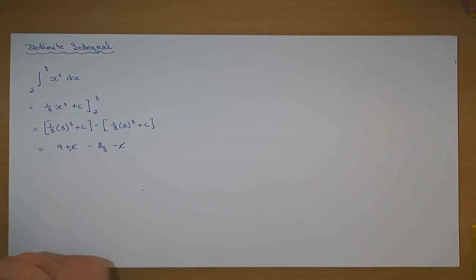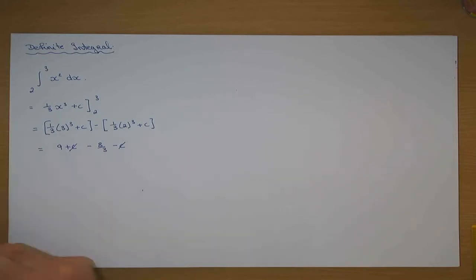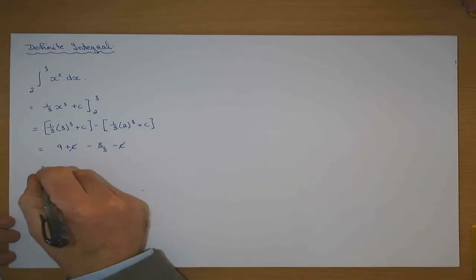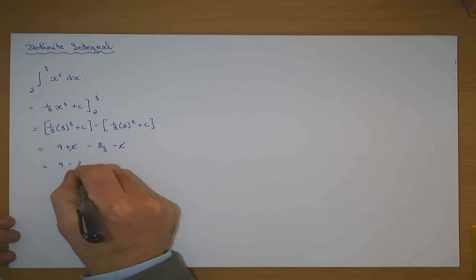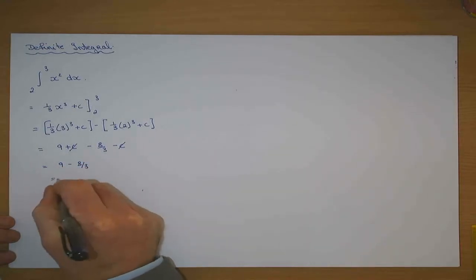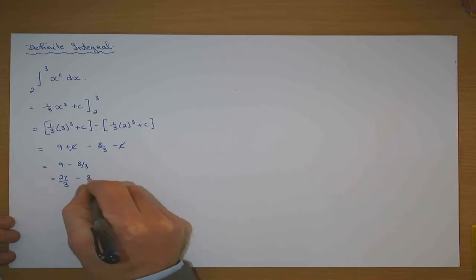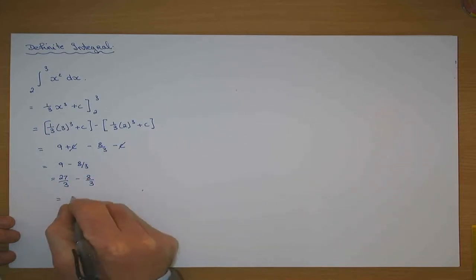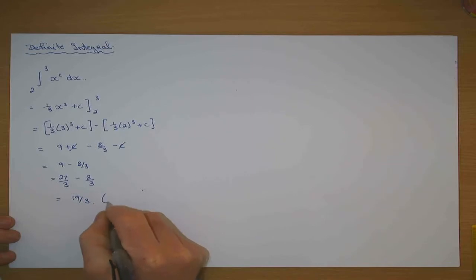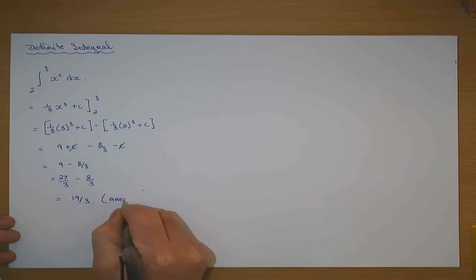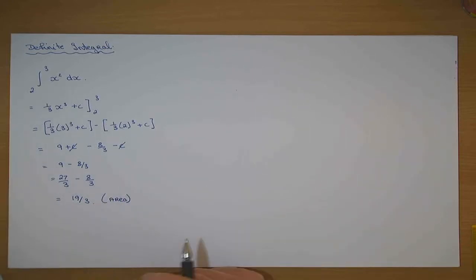In the integration you will be doing in real life, it is a definite integral — there are numbers. So that's nine minus eight over three, which is twenty-seven over three minus eight over three, which is nineteen over three. What you've worked out is an area, and I'll give you a real practical application of that area now.